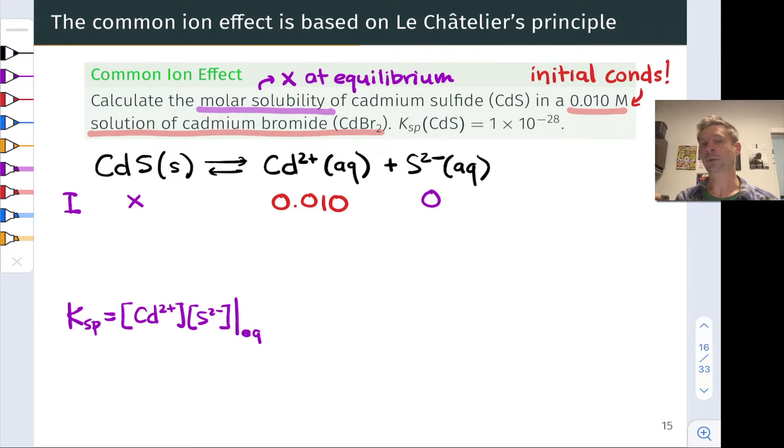With the sulfide concentration equal to zero in the cadmium bromide solution, Q initial, Qsp initial, is equal to zero. This means the reaction will go in the forward direction, and naturally that mass of cadmium sulfide solid that we threw in is going to dissolve to some extent. To what extent is the question we want to know the answer to.